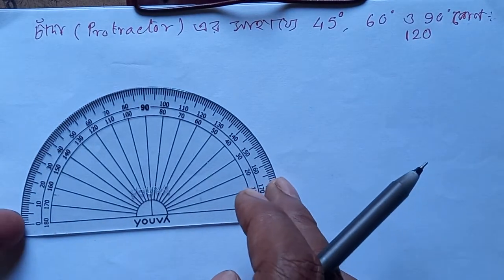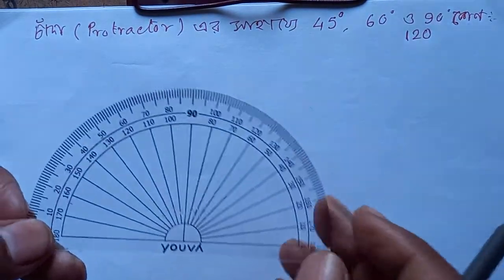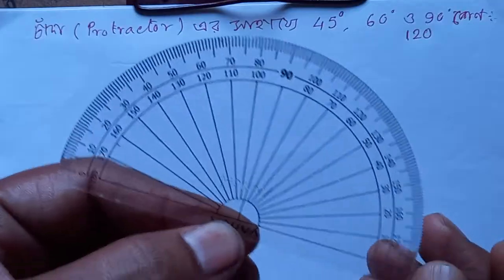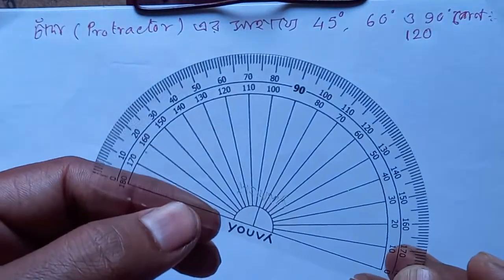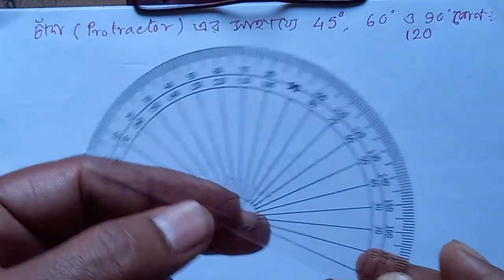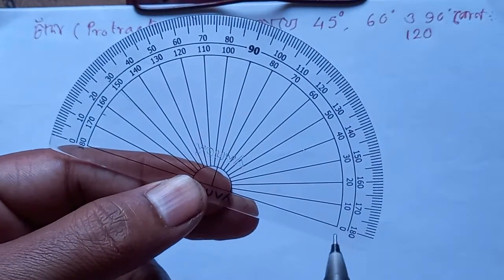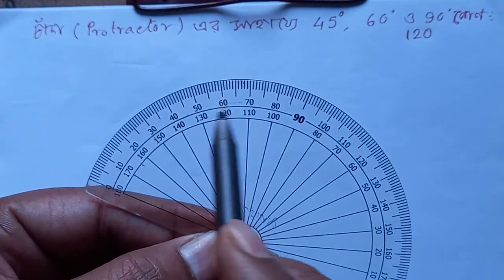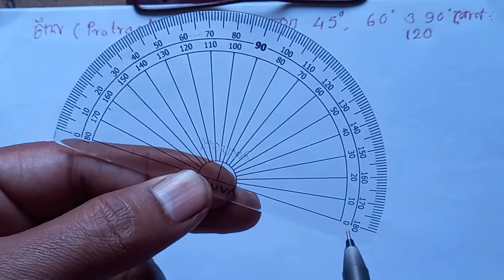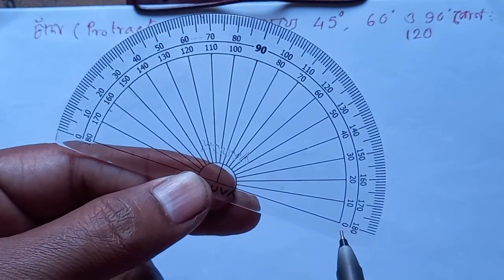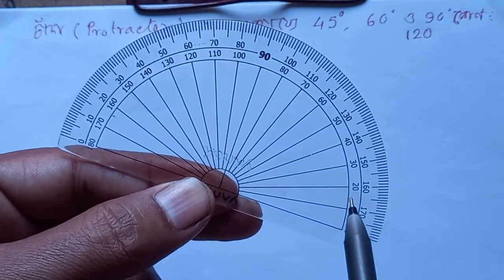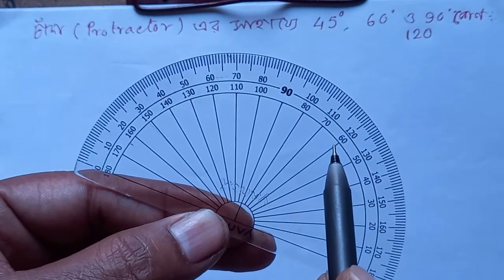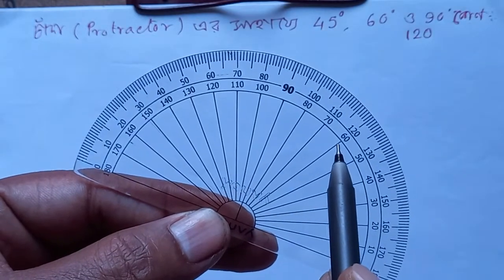We are talking about the protractors. We are talking about 0, 10, 20, 30, 40, 50, 60 degrees.